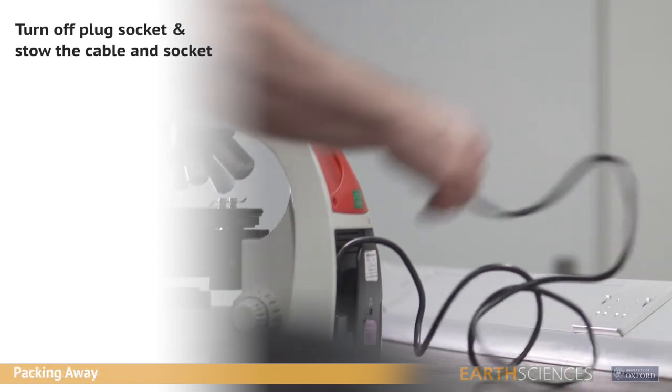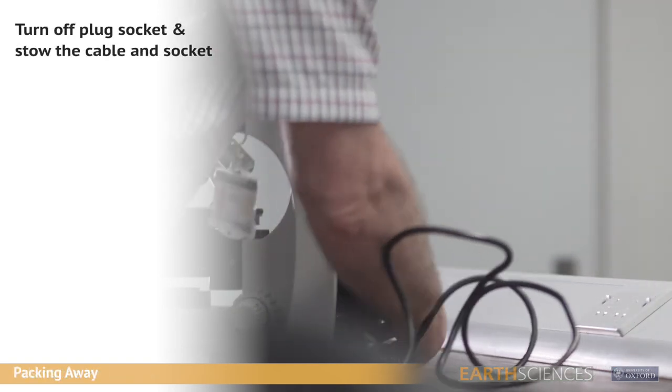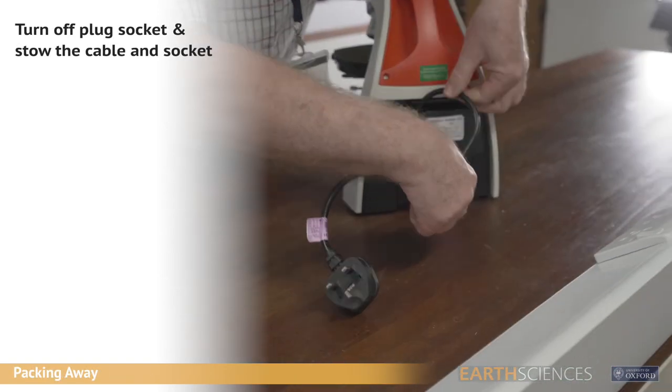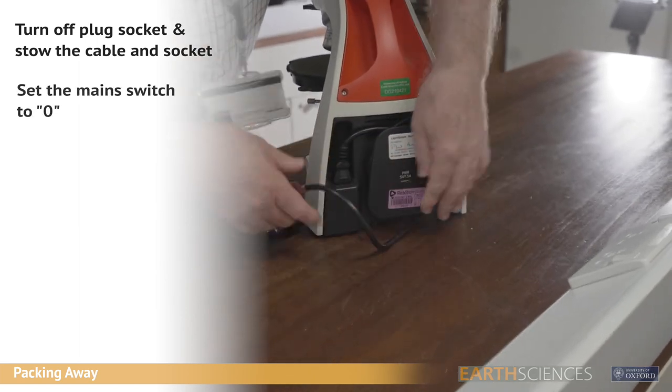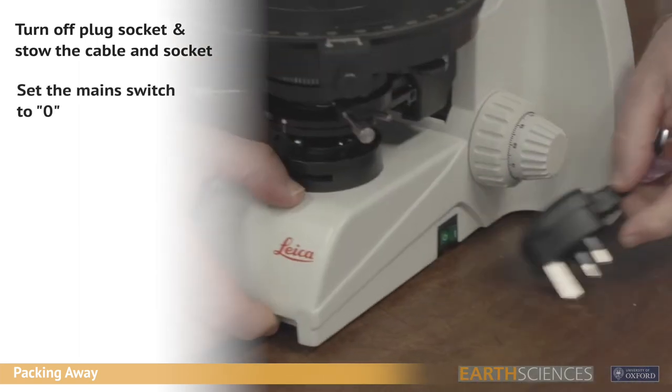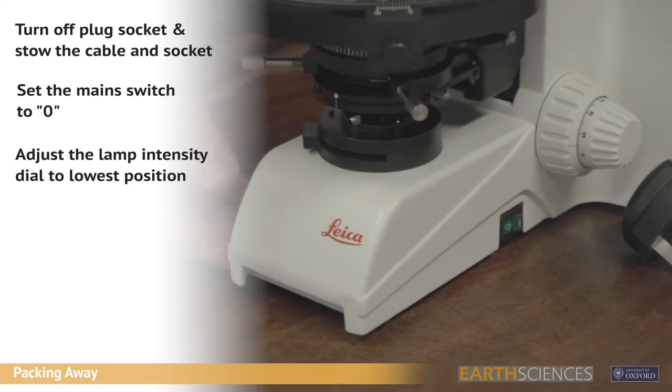When packing away, turn off the plug socket and stow the mains cable and socket in the cable tidy at the rear of the microscope. Set the mains switch to zero and adjust the lamp intensity dial to the lowest position.